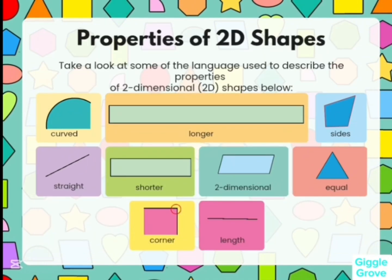Let's take a look at some of the names used to describe the properties of two-dimensional 2D shapes. The key vocabulary includes: curved, longer, sides, straight, shorter, two-dimensional, equal, corner, and length.